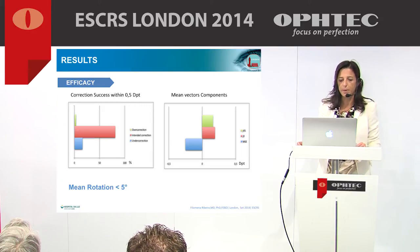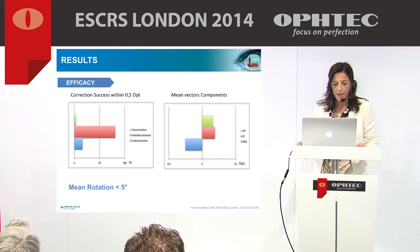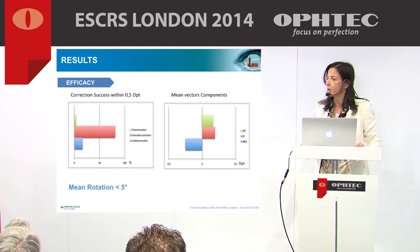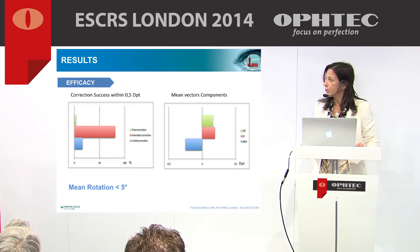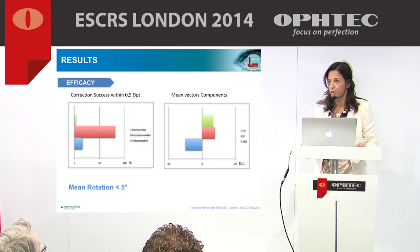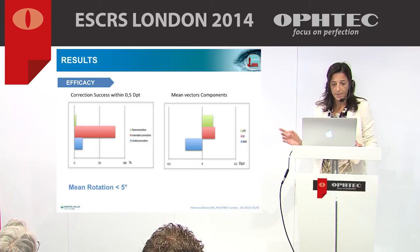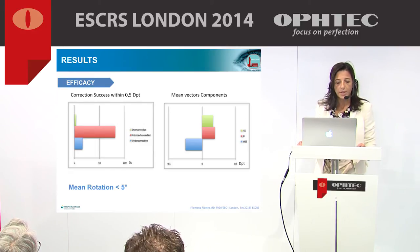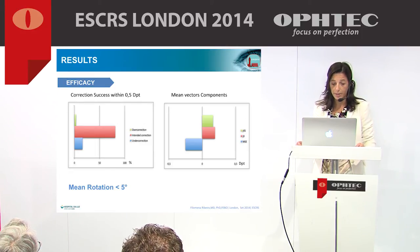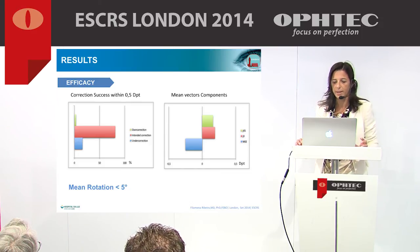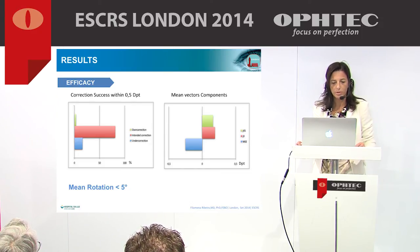We started to implant this lens last year and so far have very good results. For the large majority of cases, we obtained the intended refraction within half a diopter, as you can see in the graph. The mean vector components are also within less than half a diopter, and the mean rotation was less than 5 degrees.